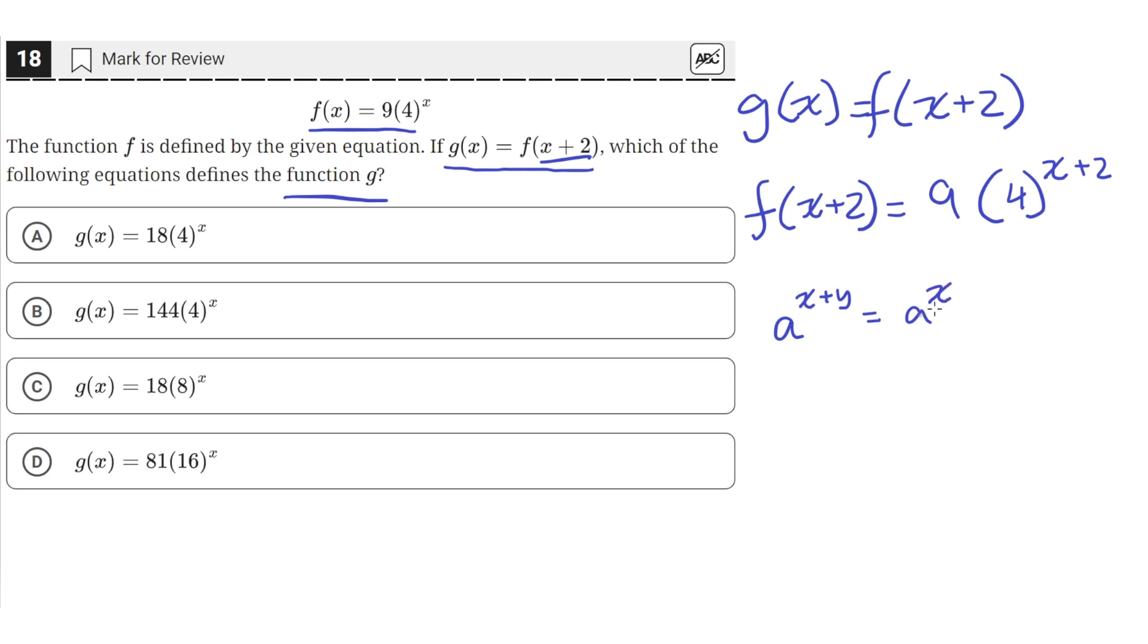then we can rewrite this as a raised to the x times a raised to the y. Because we know from the property of exponents that when you have the same base and you're multiplying them together, then you just add the exponents.